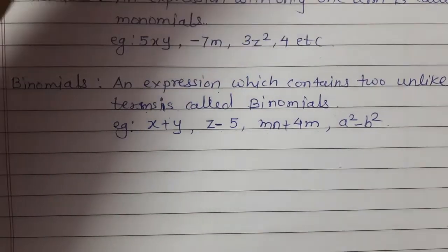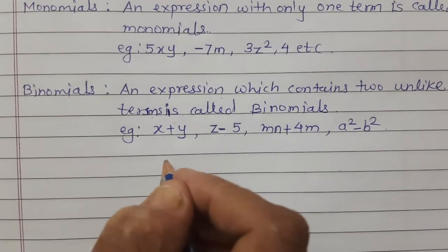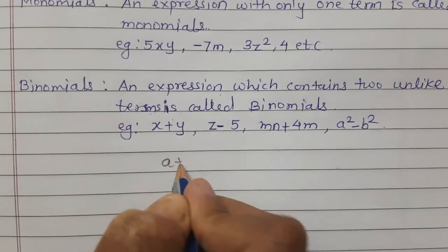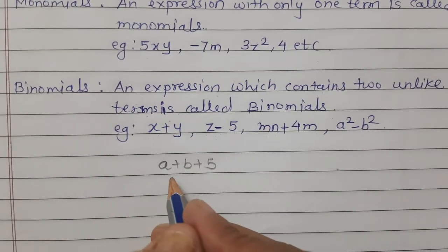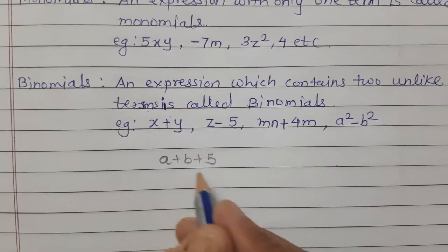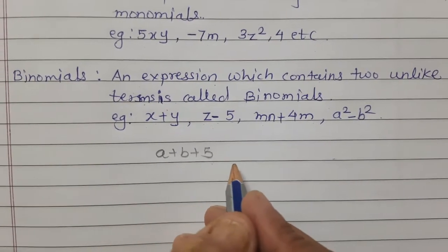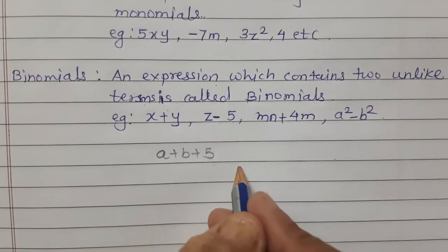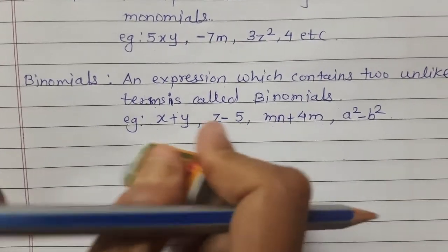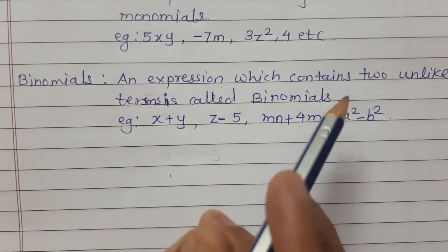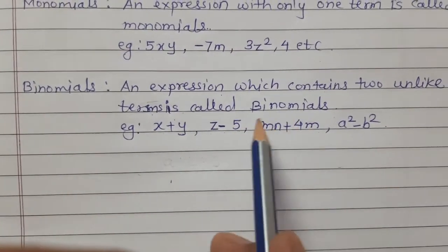If I take the example a plus b plus 5 — is it a binomial? No, this is not a binomial because it contains three terms. Binomial means an expression which contains two unlike terms.